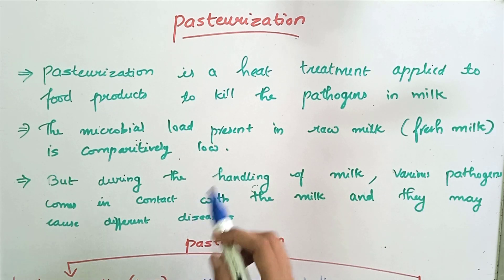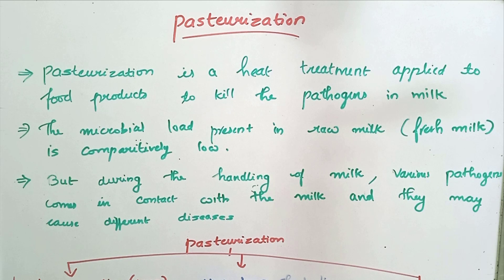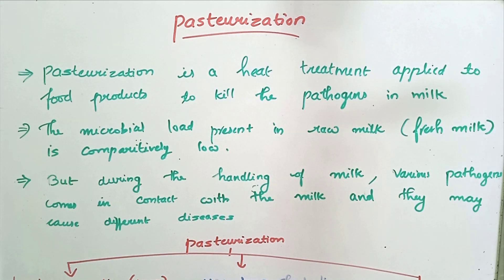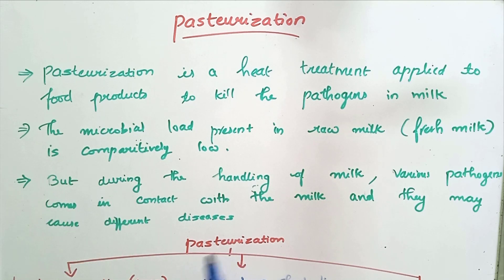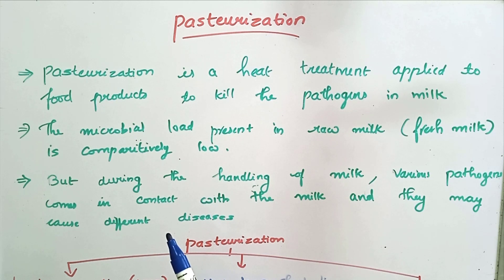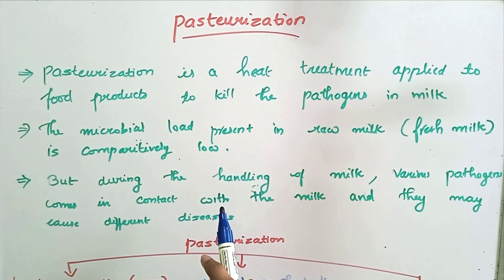The microbial load present in raw milk is comparatively low. However, when we handle the milk — during milking or transferring it into a vessel — pathogens may get transferred from the vessel or from the hands of the people. Since milk may come in contact with a number of pathogens during handling, it is necessary to eliminate these pathogens, otherwise consuming such milk will create diseases in our body. That is why pasteurization is done.